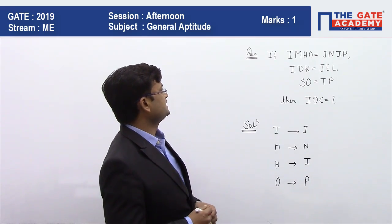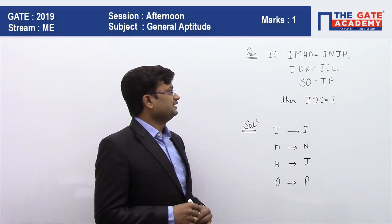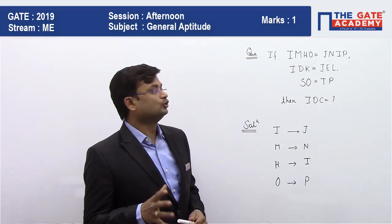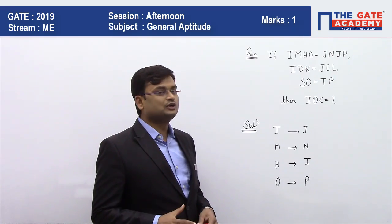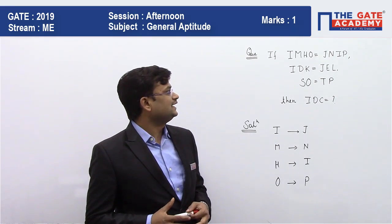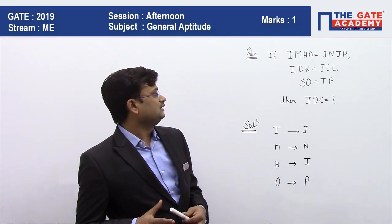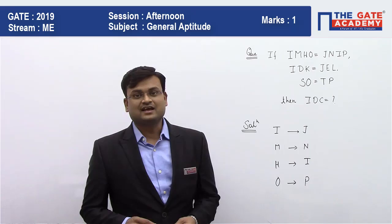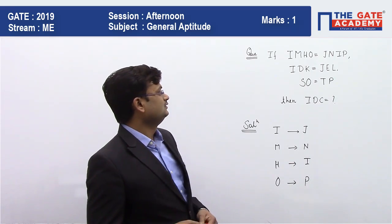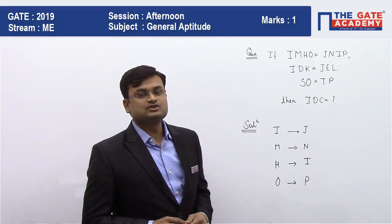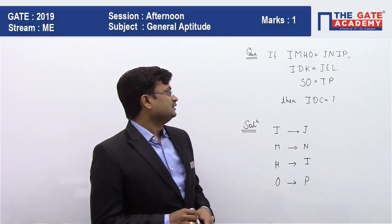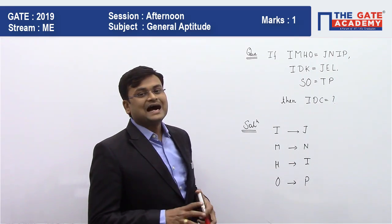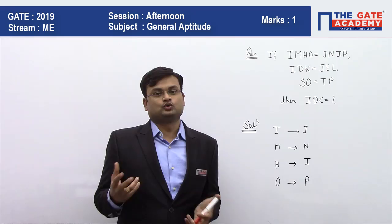The question is: if IMHO is equal to JNIP, IDK is equal to JEL, and SO is equal to TP, then what is IDC equal to?